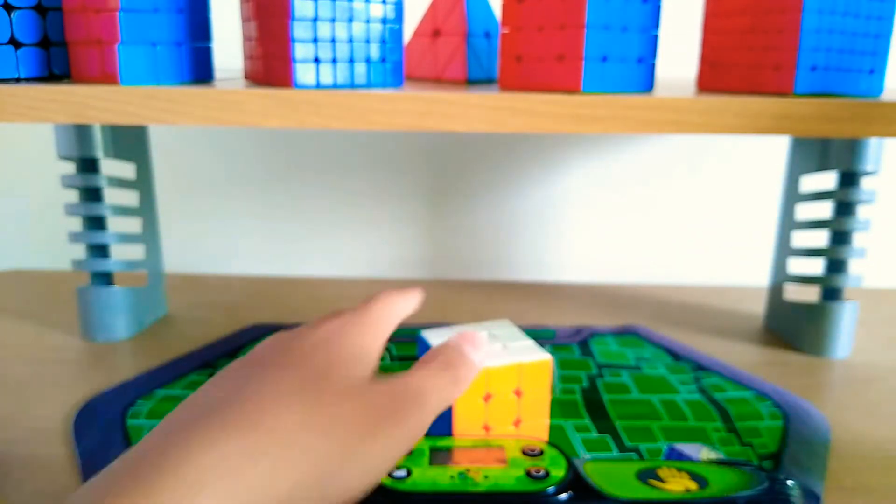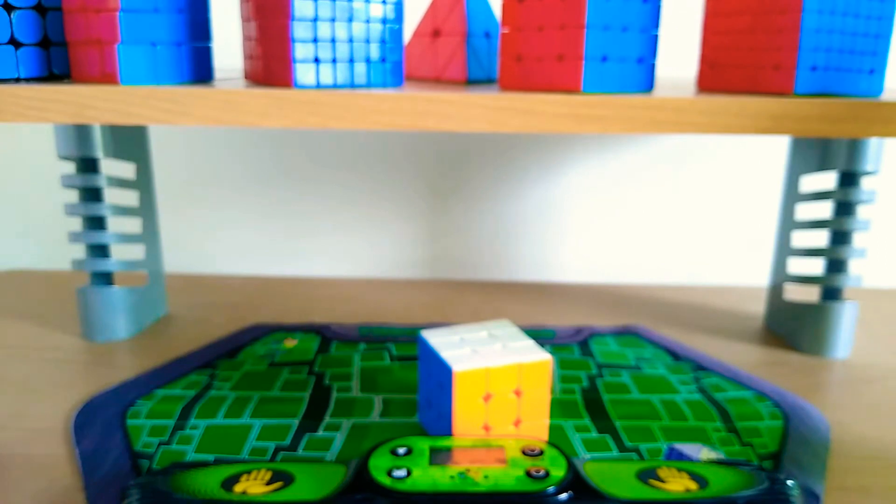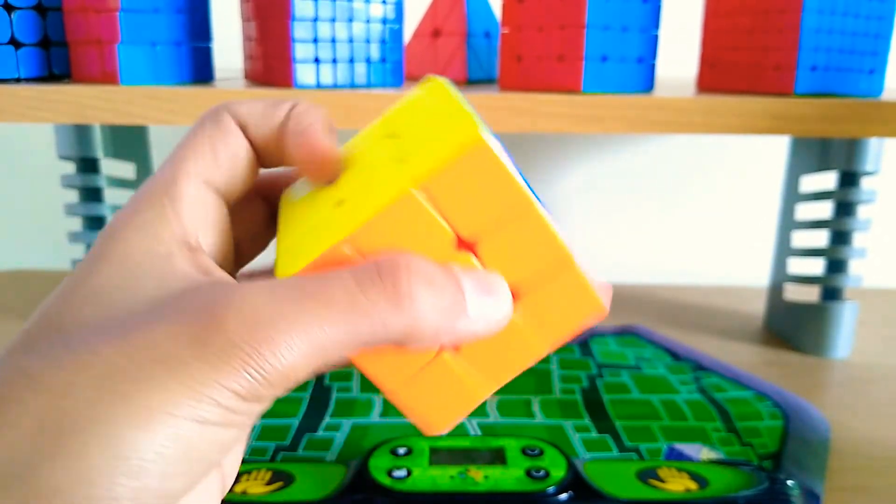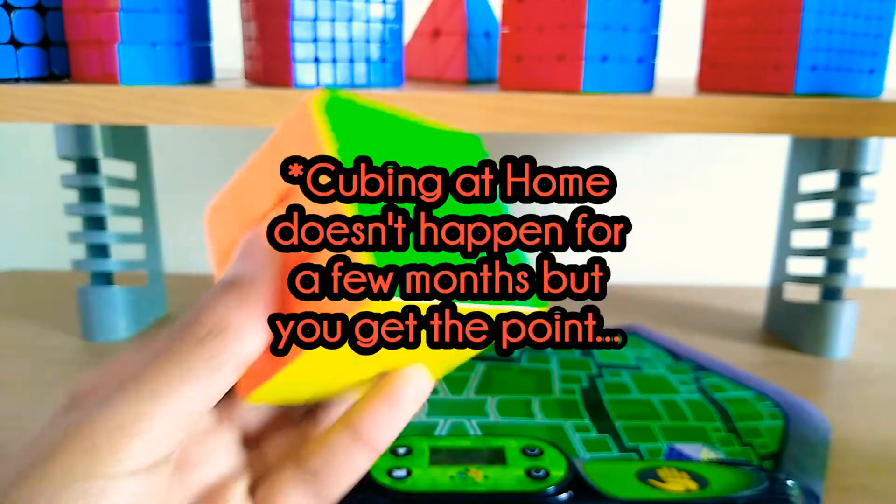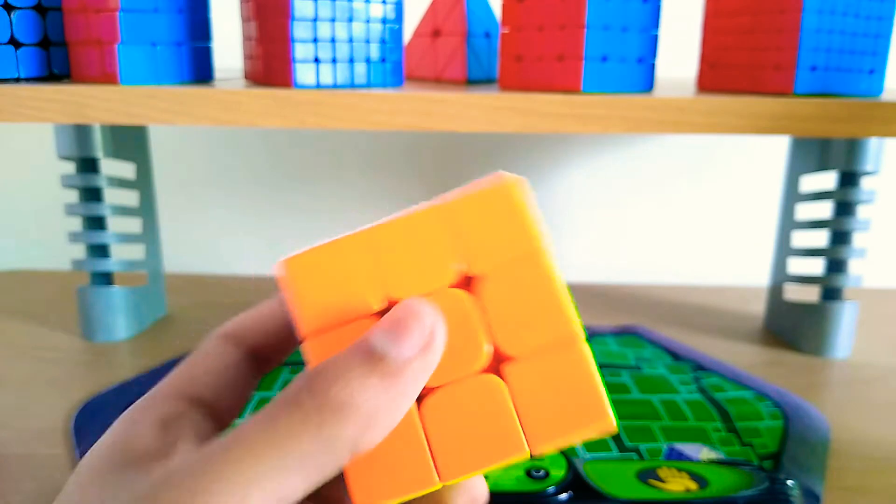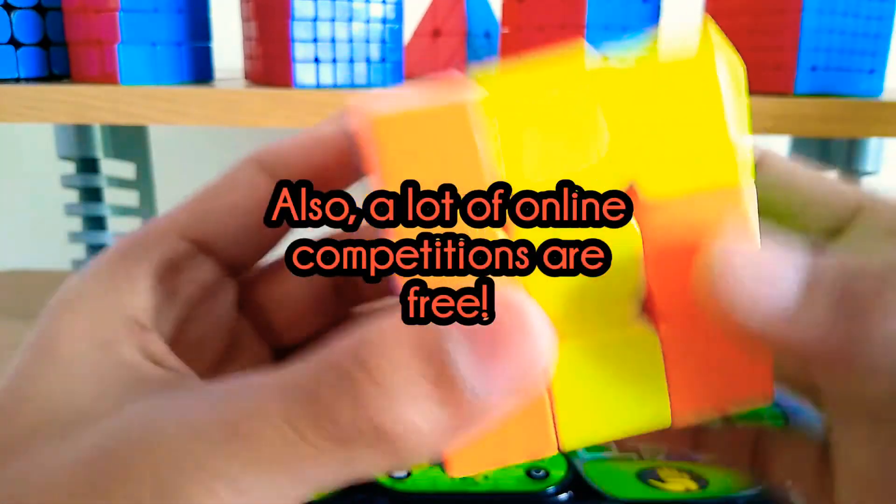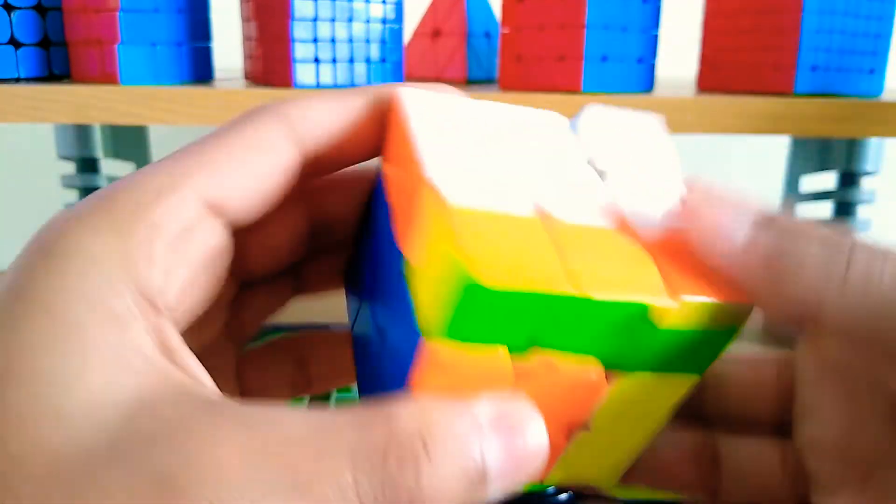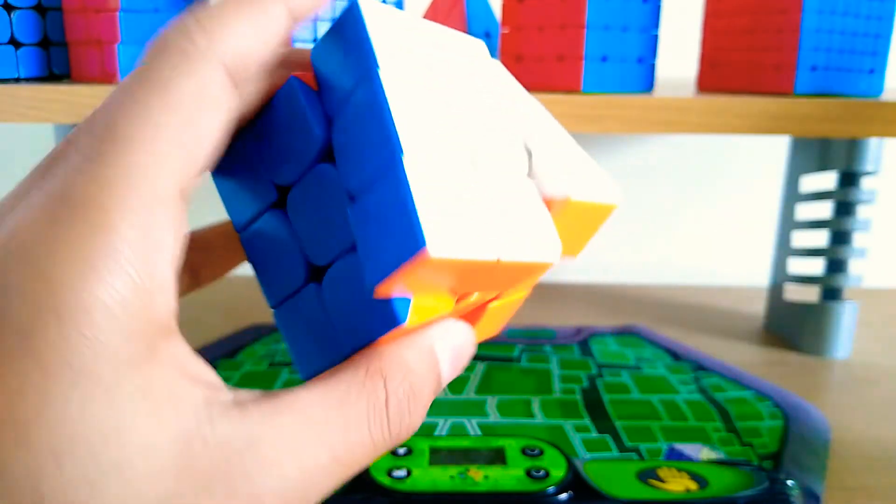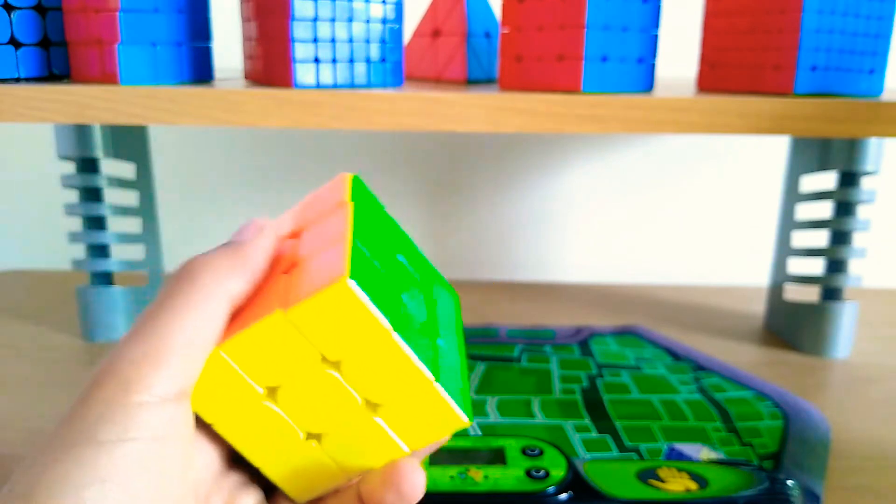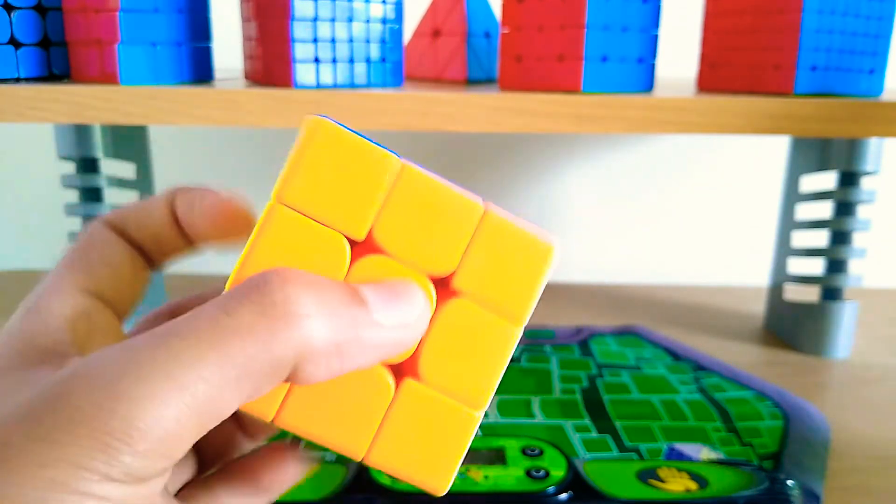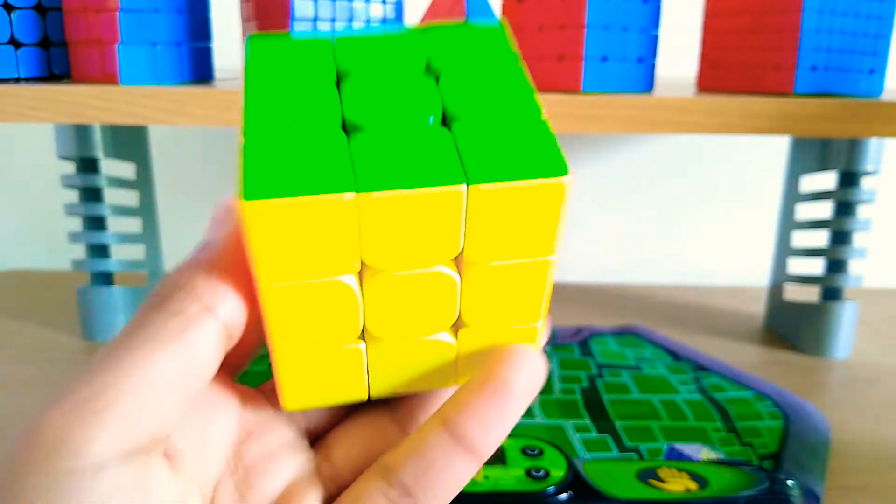That's why a thing called online competitions exists. There are many different online competitions, such as Cubing at Home, Cubing Royale, and a lot of others that take place online. It's like they live stream it, and then you just can send in your results and stuff. And sure, you don't get the whole interaction part of a competition, but if you hop on a call with some friends who are also cubers who you normally see at competitions, then it can be a really fun experience.